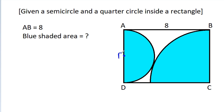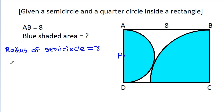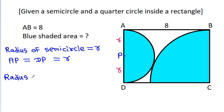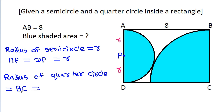Suppose P is the center of the semicircle and suppose the radius of the semicircle is equal to R. Then AP will be equal to DP, that will be R. So AP is R and DP is R. The radius of the quarter circle will be equal to BC, and BC will be equal to AD. AD is R plus R, that will be 2R. So BC is 2R.